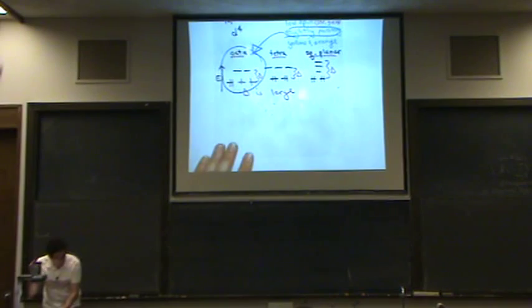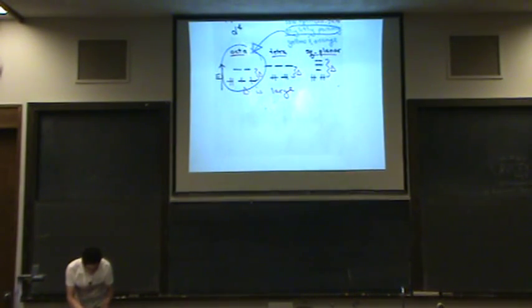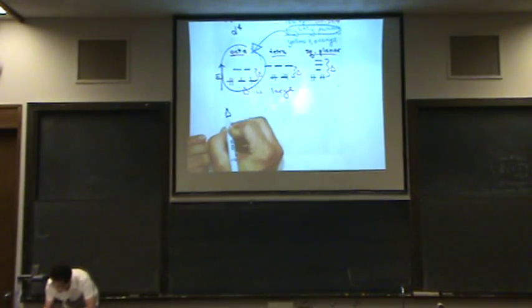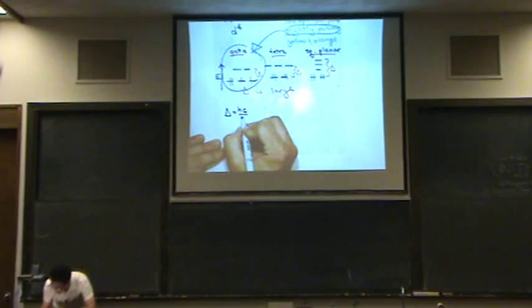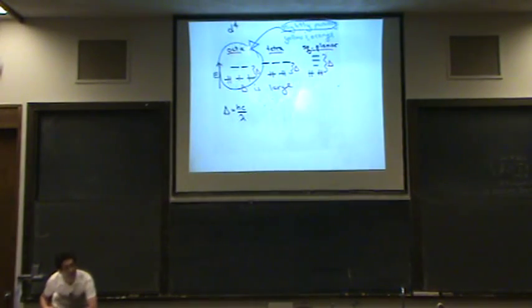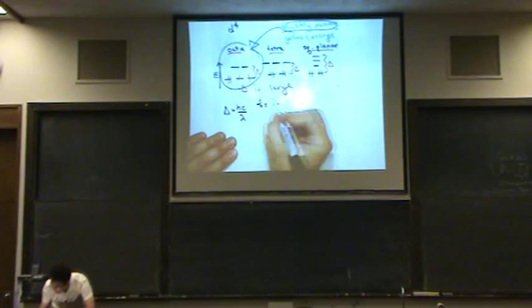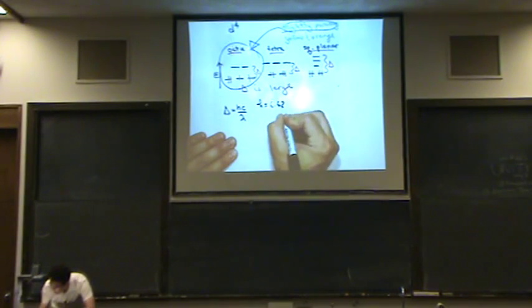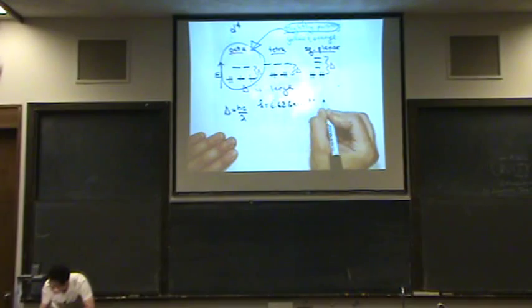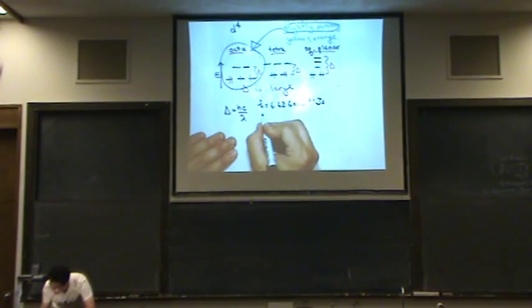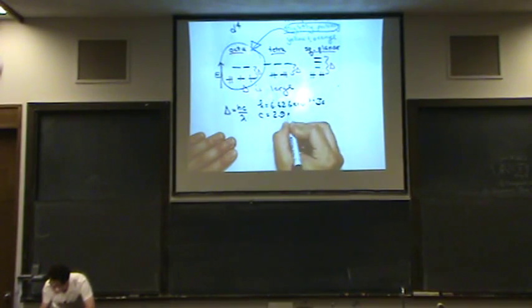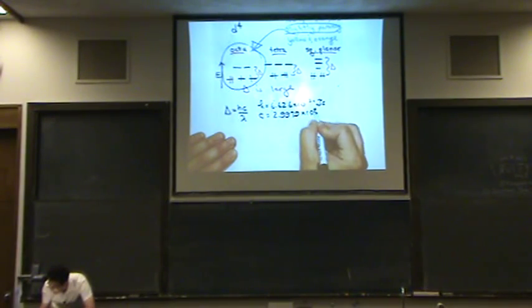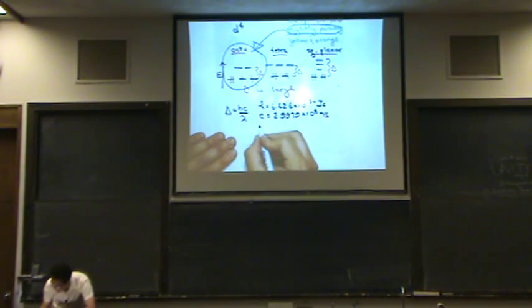The next part of the problem is actually a little bit of a math problem. It says calculate delta mathematically. We want to know what delta is. Well, if you had to do that, you'd have to use this one. Let's write out what all the constants are. This is Planck's constant, 6.626 times 10 to the minus 34 joule seconds. C is a constant, 2.9979 times 10 to the eighth meters per second. Then what's lambda?